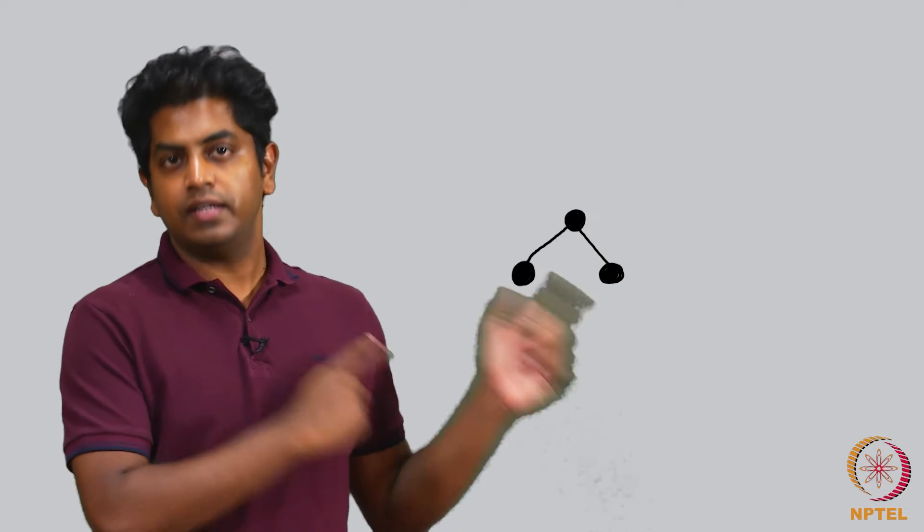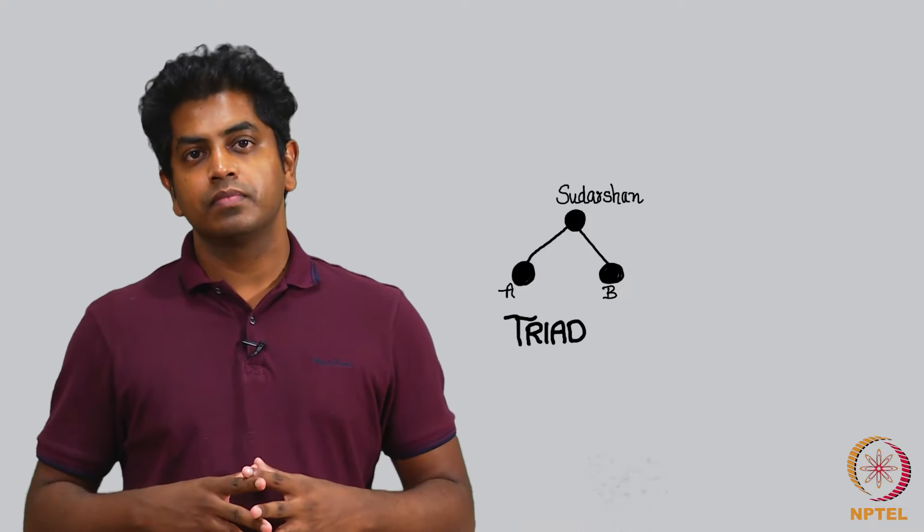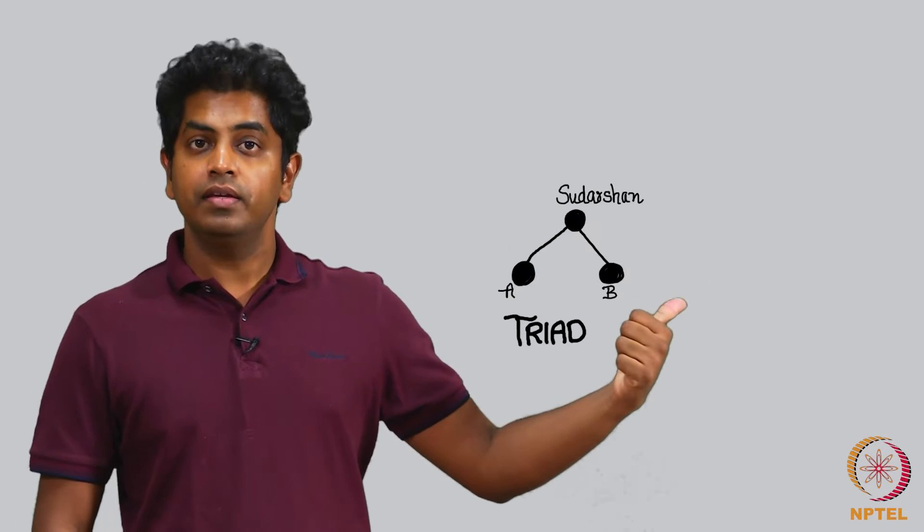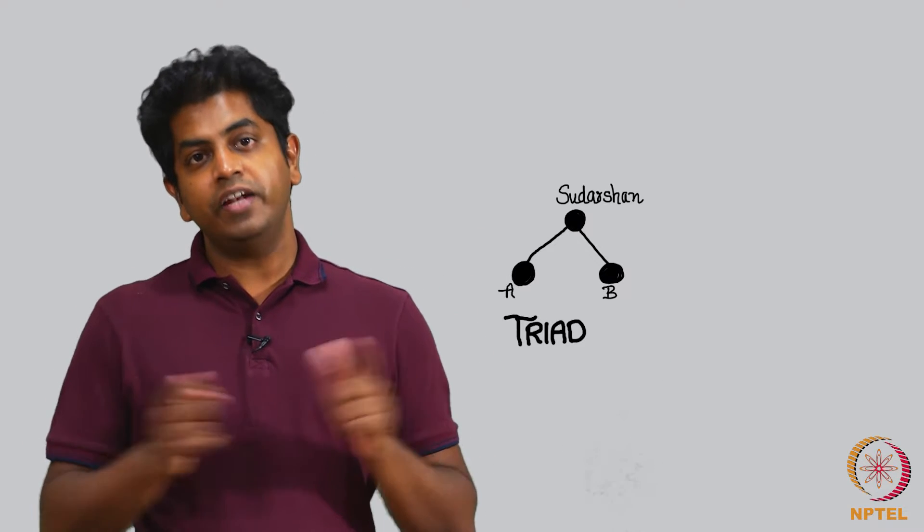Firstly, I would like to define this structure. As you can see, this is called a triad. A triad is simply speaking, Sudarshan knows two people A and B, and this is called a triad, and A and B they do not know each other.